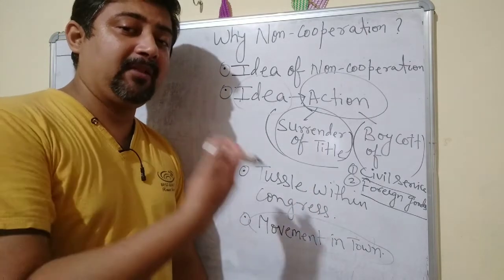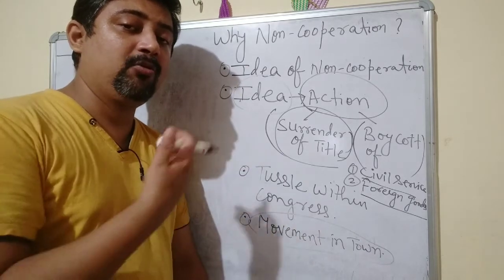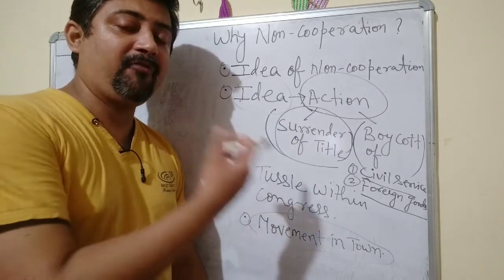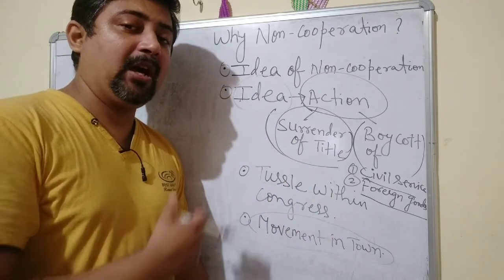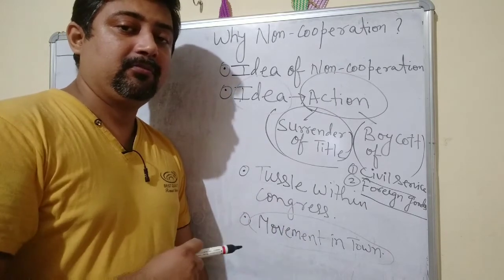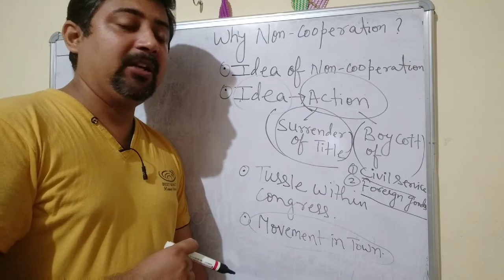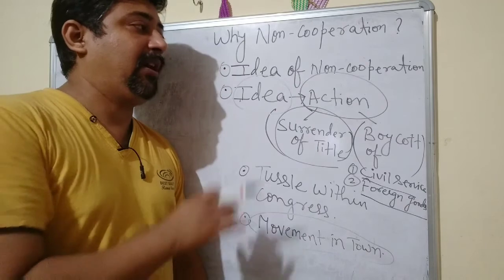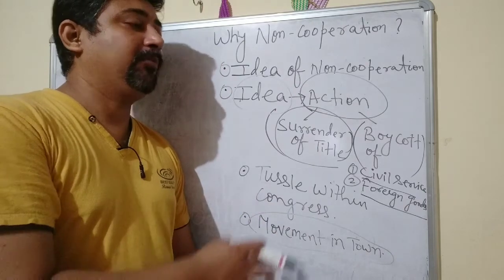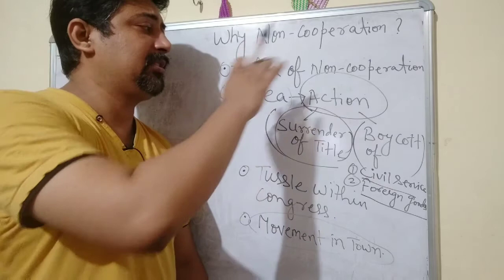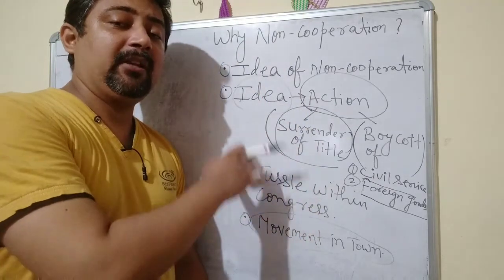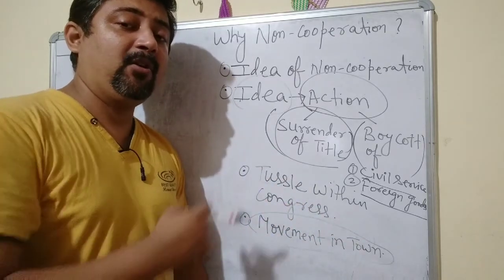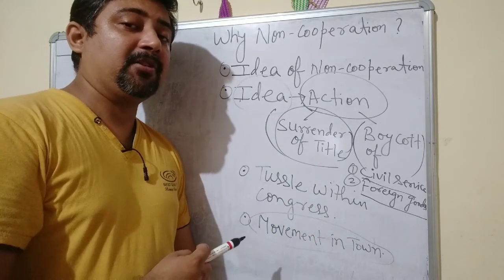As a result, after some time all the clerks, lawyers, school teachers, and students came back and rejoined the schools, colleges, and offices. This is how the British again understood that it was easy to dominate Indians. So we need to understand how the movement started in towns and what its impact was. In the next video we will try to understand about the movement in countryside and among plantation workers. Thank you so much.